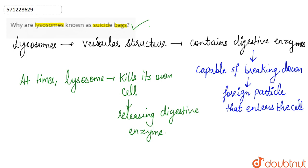Lysosome releases its own digestive enzymes and kills its own cell or it causes the self-destruction of a cell. That is why lysosome is known as the suicidal bag.